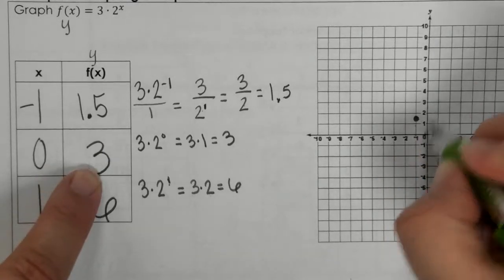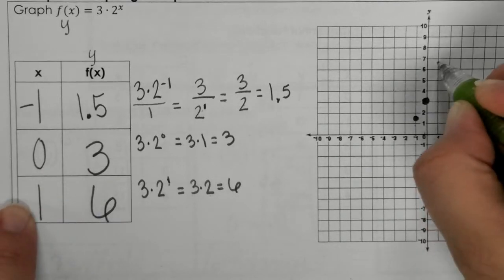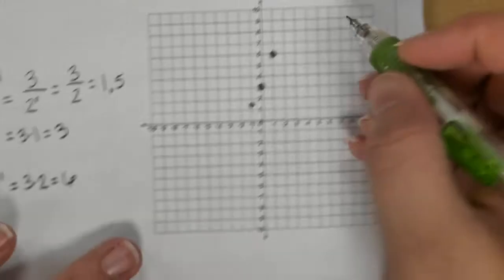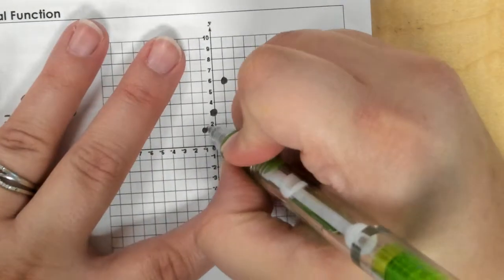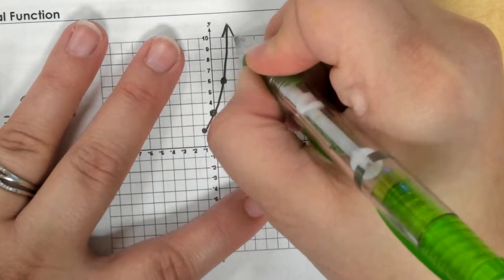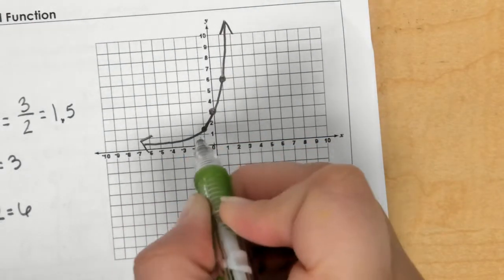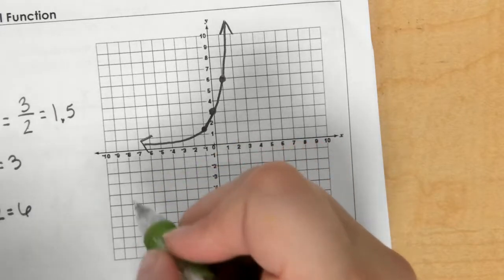Then, we have 0, 3 and 1, 6. So when I draw this, it will be a curved shape. And the curve will come really close to x, but actually, it never gets there. It approaches x, but doesn't actually get to x.